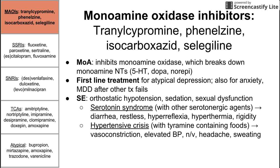MAOIs can also cause hypertensive crisis when administered to a person who eats a lot of tyramine-containing foods — including some aged meats, cheeses, and chocolates. This is because tyramine is also broken down by monoamine oxidase. So if you have MAO inhibitors and too much tyramine in your body, it can cause toxicity: vasoconstriction, elevated blood pressure, nausea, vomiting, headache, and sweating.